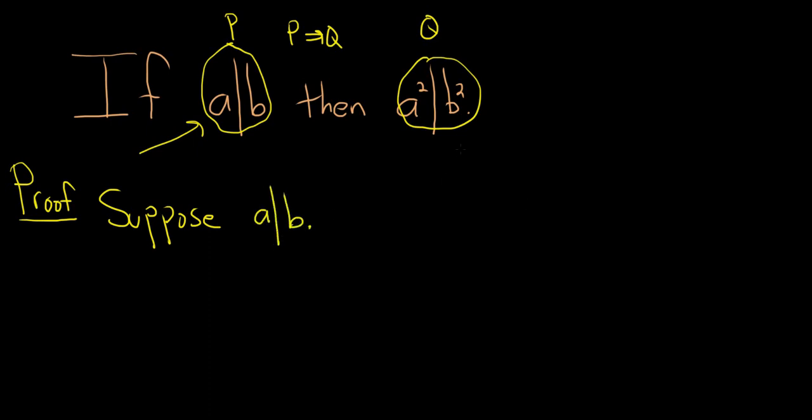Now you have to somehow show that q is true. So typically what you do in a proof like this is after you write down your hypothesis, which is p, you have to go a little bit further. You have to write down what your hypothesis actually means. So what does it mean for a to divide b?